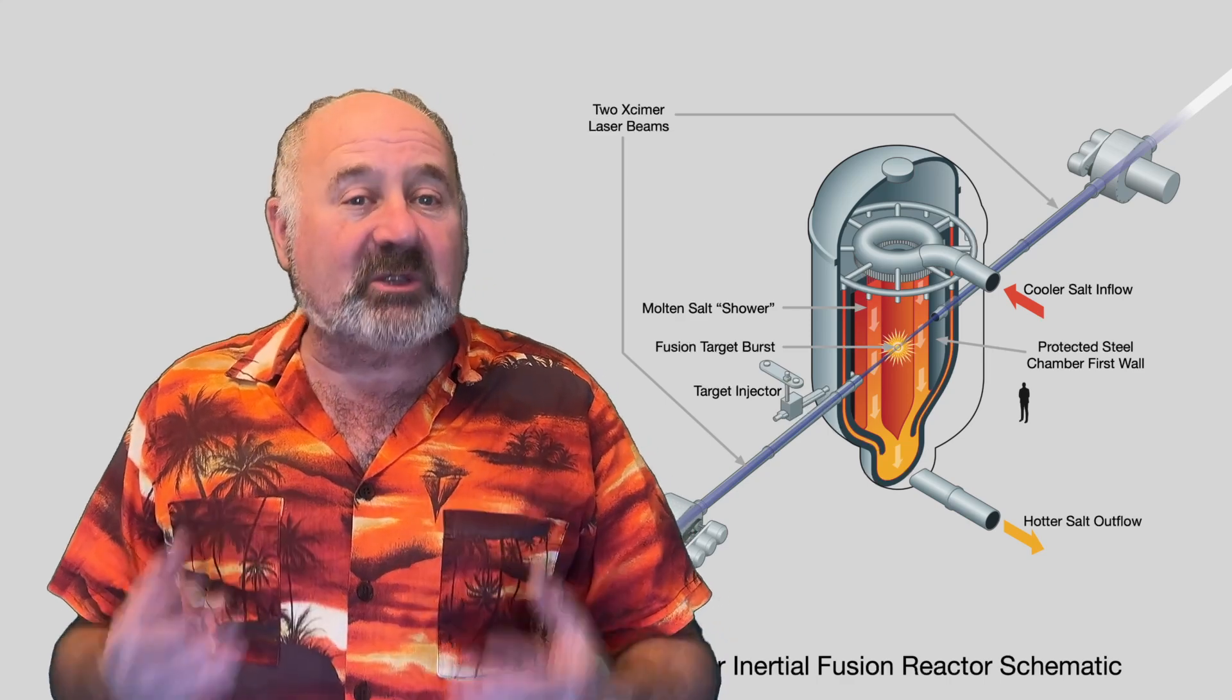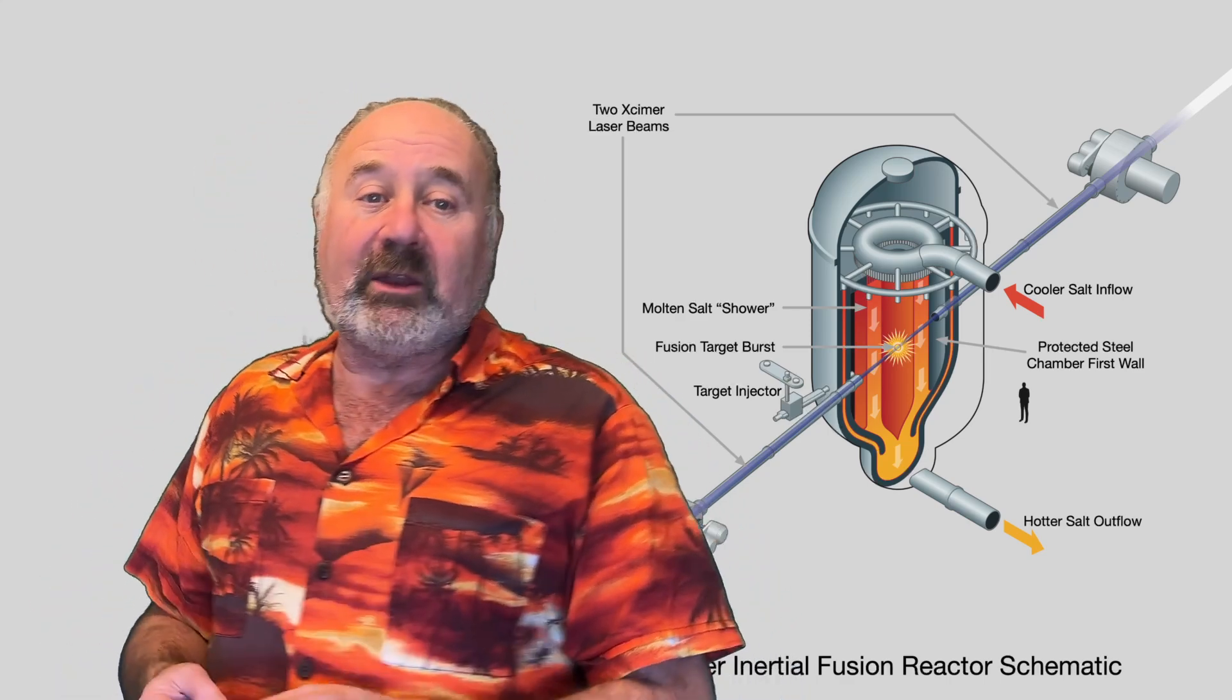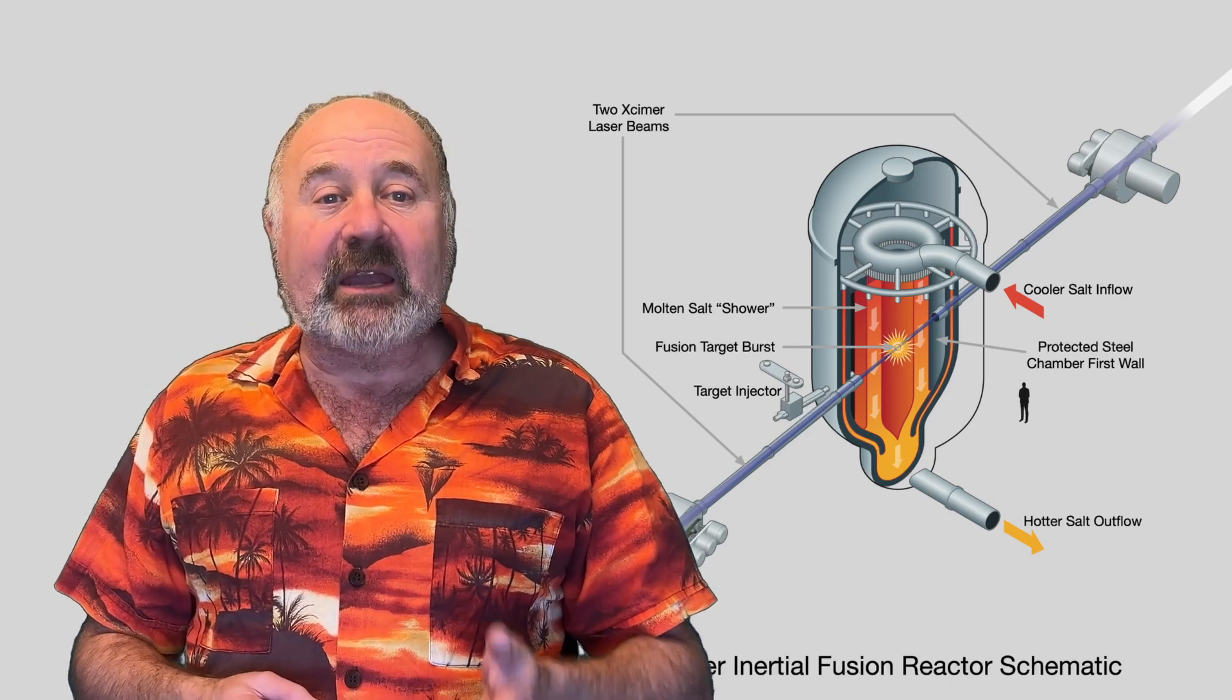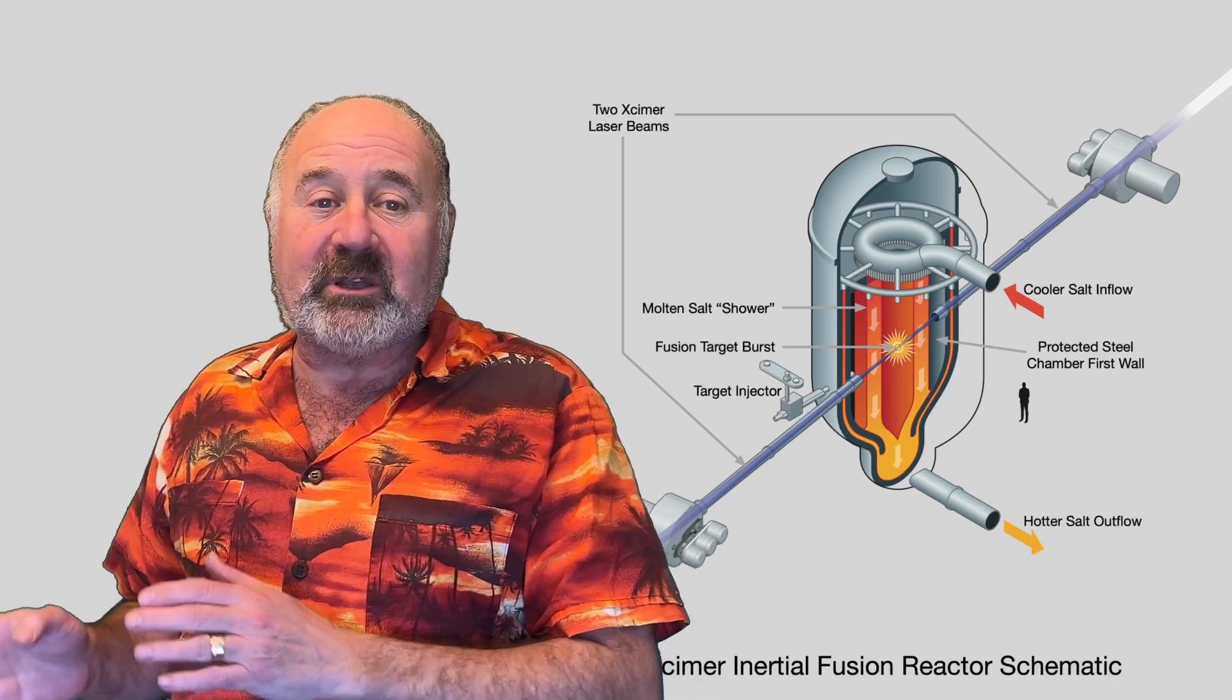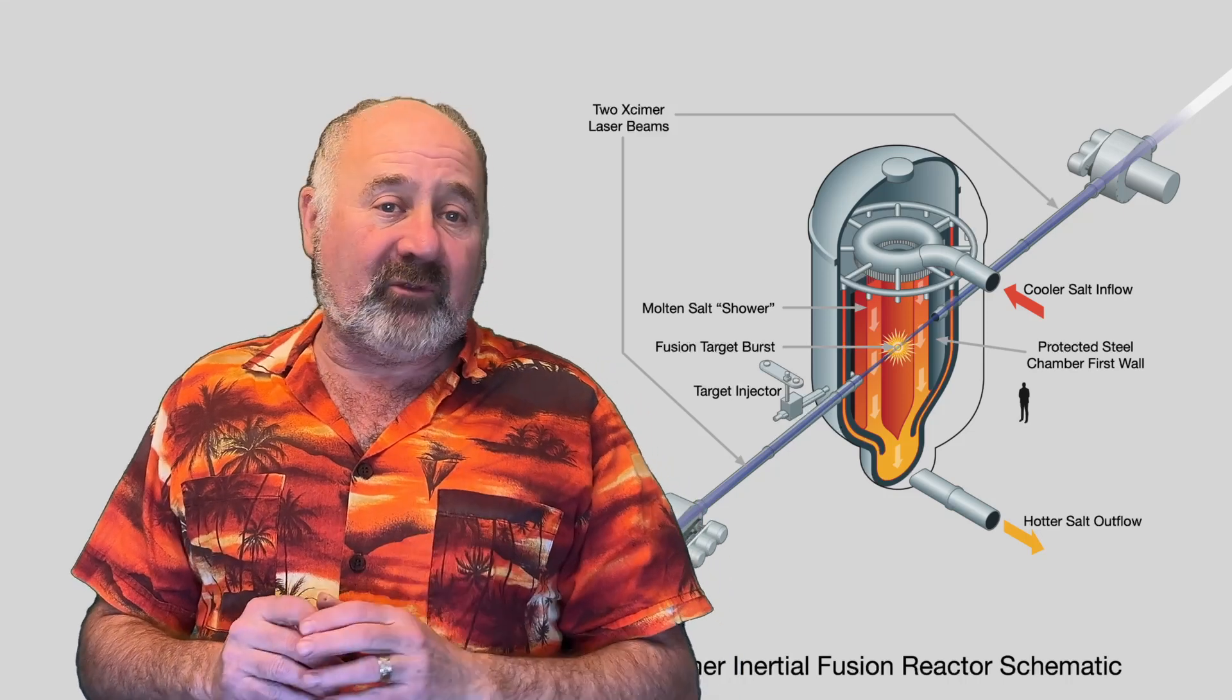Unlike tokamaks, there's no steady state burning where you can just introduce fuel and remove energy. Even Helion can use the energy from the previous pulse directly to power the next one, much more efficiently.